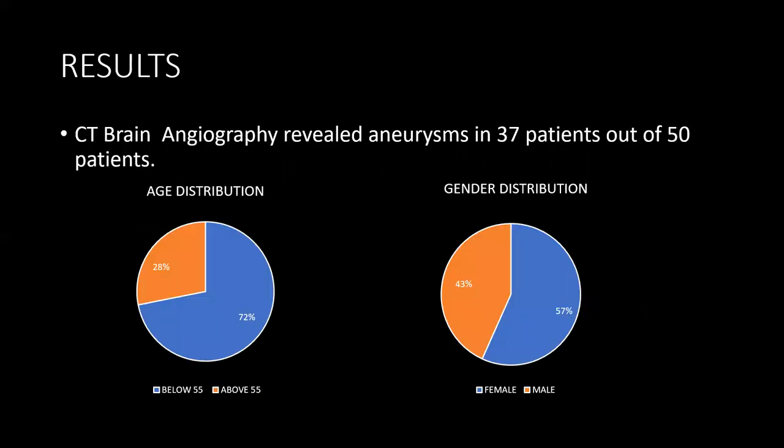Results: CT brain angiography revealed aneurysms in 37 out of 50 patients. Age distribution showed 72% below 55 years and 28% above 55 years. Gender distribution showed a female predominance at 77%.